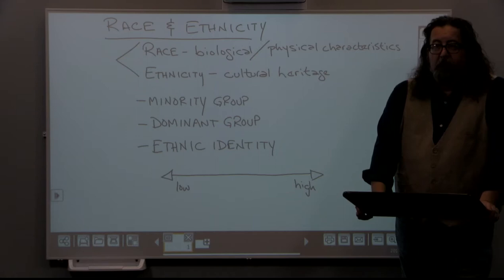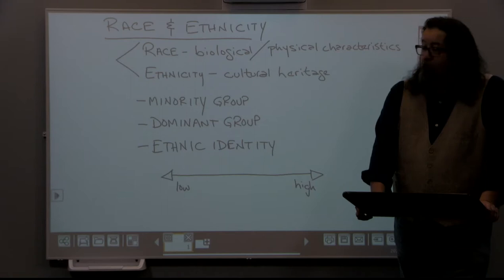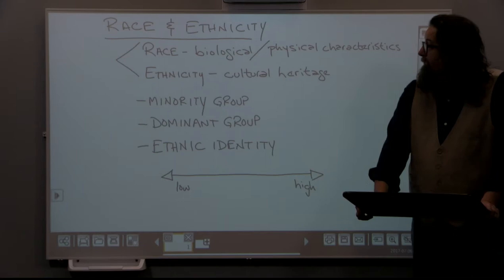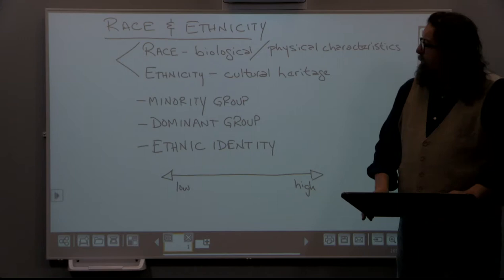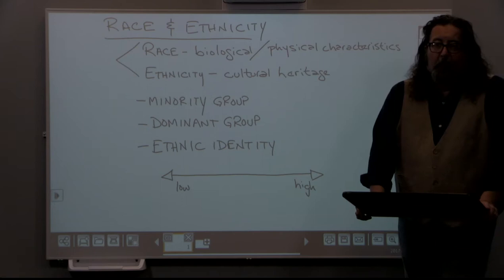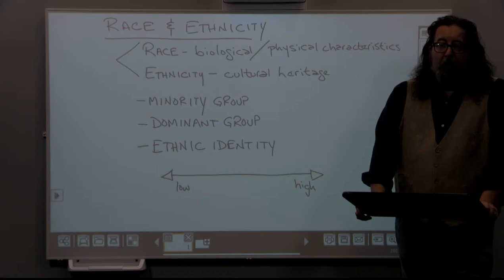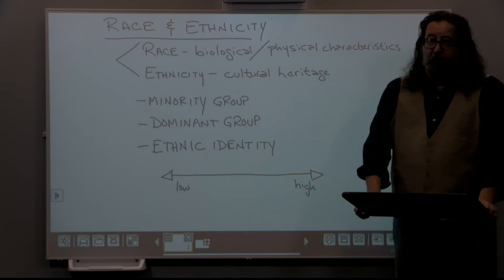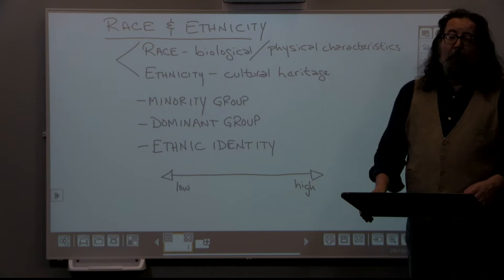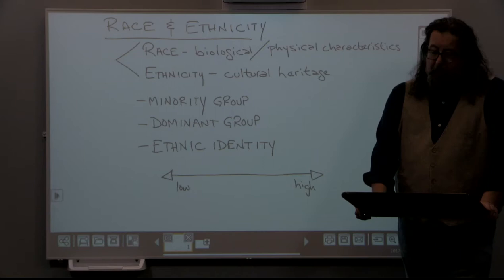These words are commonly used interchangeably in the general social sphere, but sociologically we draw very profound distinctions between them. When we talk about race, we're talking about any large group of people which is defined by inherited physical characteristics that might separate them from other groups. When we talk about racial characteristics, we might think about things like skin color, eye shape, or hair type. Clearly, when we're talking about race, we're talking about biological distinctions — physical characteristics which are handed down hereditarily.